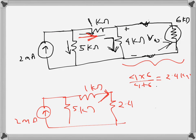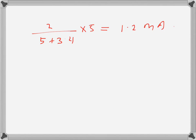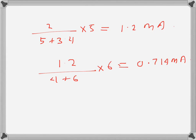The 1.2 milliamps will be divided between the 4 kilo ohm and 6 kilo ohm resistances. The current through the 4 kilo ohm resistance is found by applying the current divider rule: 1.2 over (4 plus 6) times 6, giving 0.714 milliamps. The voltage V0 that the meter will read is this current times the resistance, which is 2.85 volts.